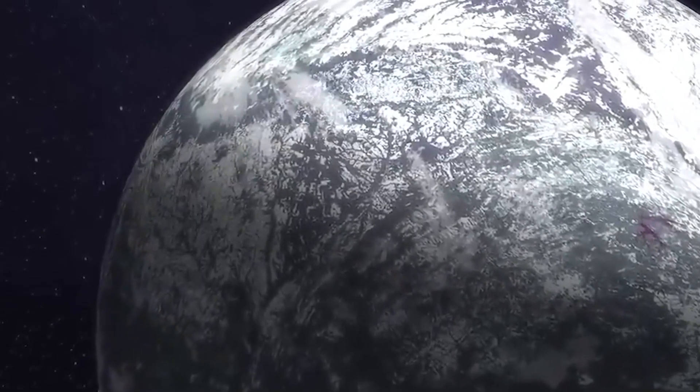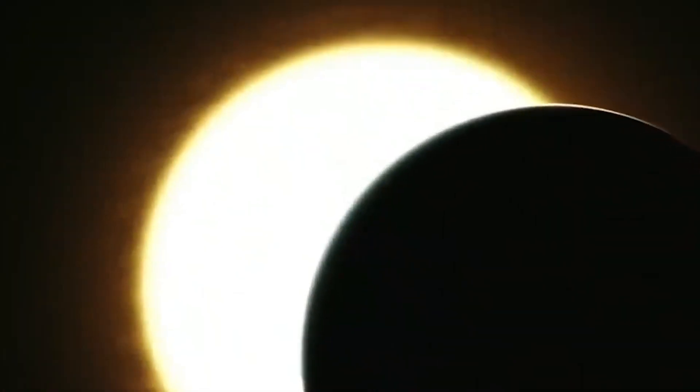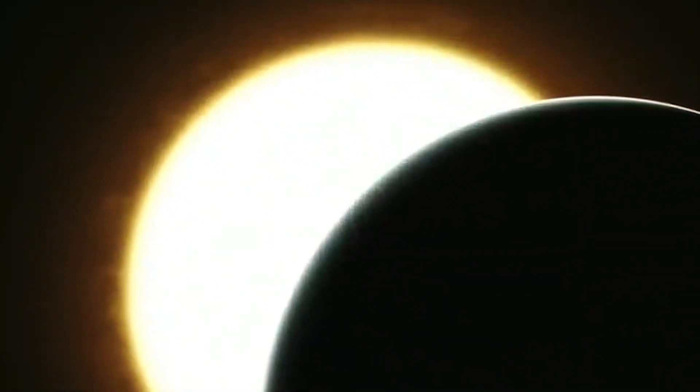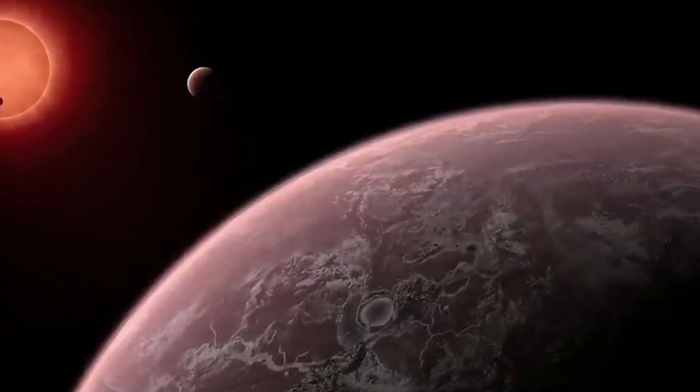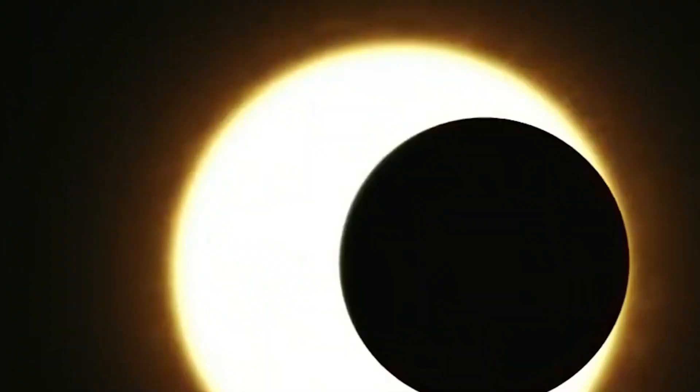However, for Proxima b, the stars of the red dwarf emit great X-rays constantly, 4,000 times the intensity of our sun, and this may prove to be highly dangerous to life beings dwelling on it.